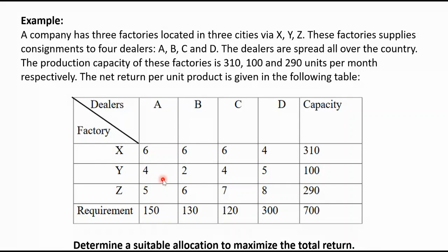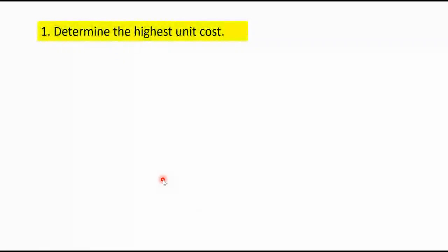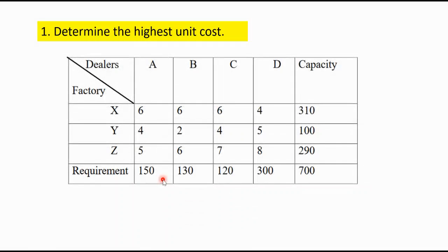The problem is: how can we allocate units so that we can maximize the total return? That is the goal of this particular problem. The first thing we need to do is determine the highest unit cost found in the table. From this table, it is very obvious that the highest unit cost is found in factory Z to dealer D, which would be 8.